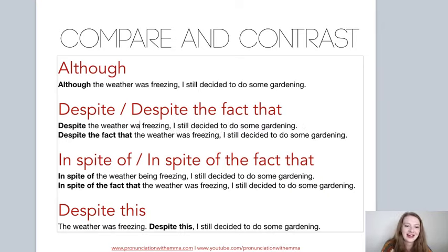Any questions so far? Regarding despite and in spite of — it doesn't matter what tense you're using. With despite and in spite of, you always use ING. It's the verb that changes — 'being' was the verb, 'freezing' was the adjective in the example I showed earlier. So: despite being cold, despite being freezing, despite being whatever — it's always the verb form that takes ING.